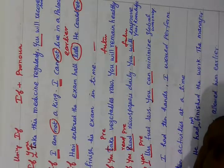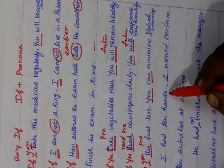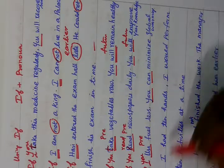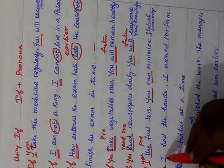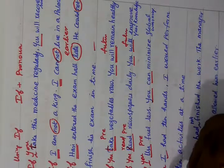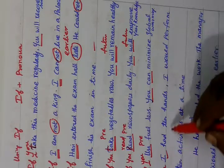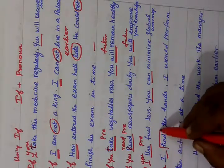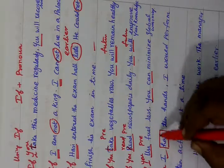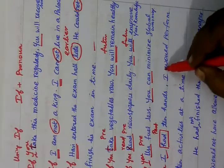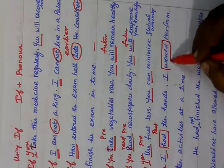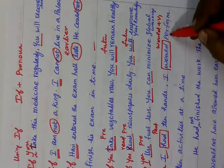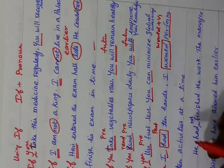Exercise 7: 'I had 10 hands. I would perform 10 activities at a time.' 'Had' is past tense, so we use 'would' in the main clause. We write: 'If I had 10 hands, I would perform 10 activities at a time.' The main clause uses would + V1.